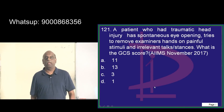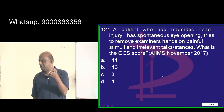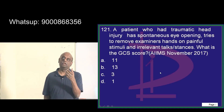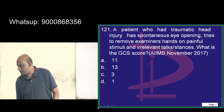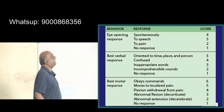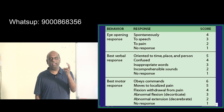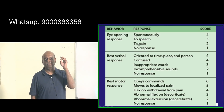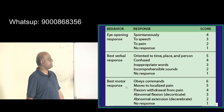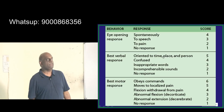The examiner's question is: what is the GCS score — the Glasgow Coma Scale? You all know very well: E, V, M — E for eye opening, V for verbal response, and M for motor response.